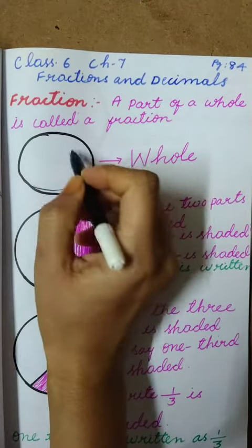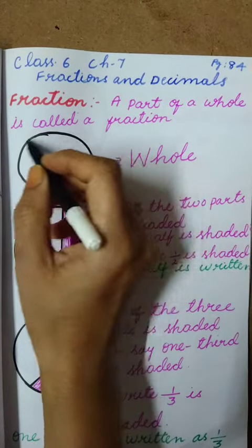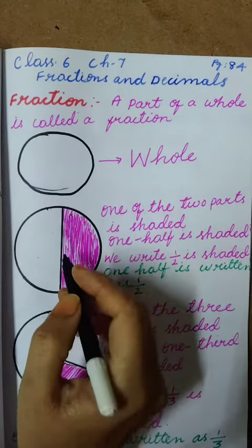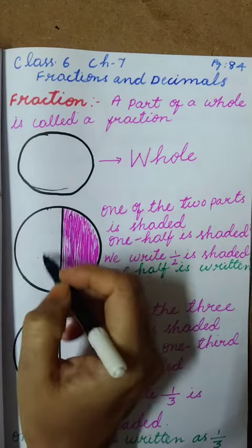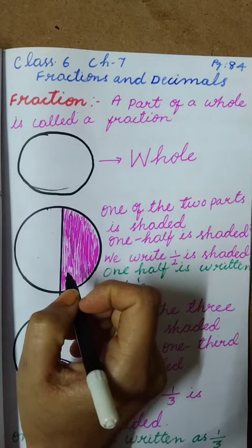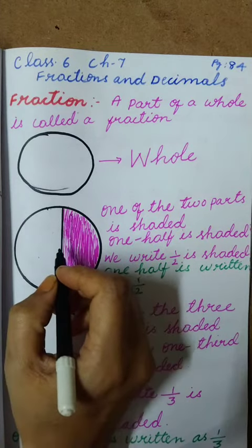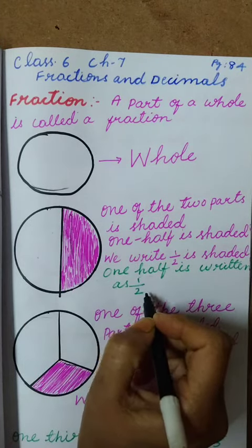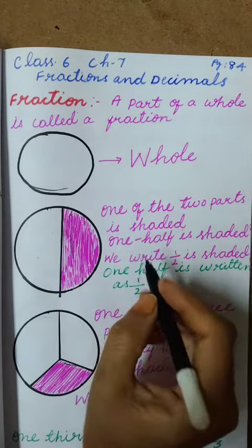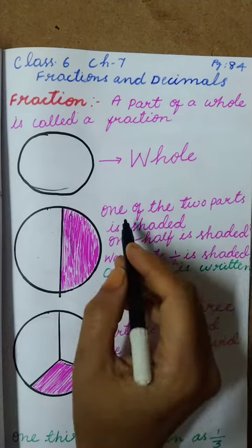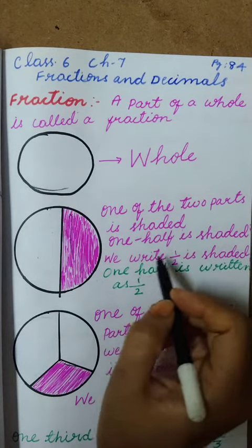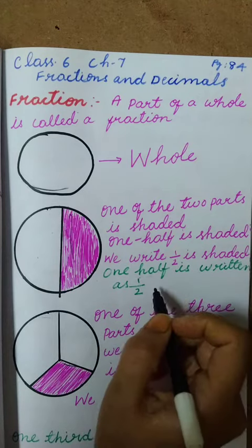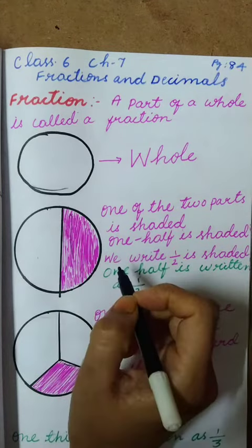I draw here one whole part. This is the whole part. I am making it into two equal parts, that is 1 by 2. One part I have shaded, one more part I didn't shade. Totally two parts are there, so we write it as 1 by 2. Total parts we write in the denominator, how many we have shaded we write in the numerator. One of the two parts is shaded — one half is written as 1 by 2.